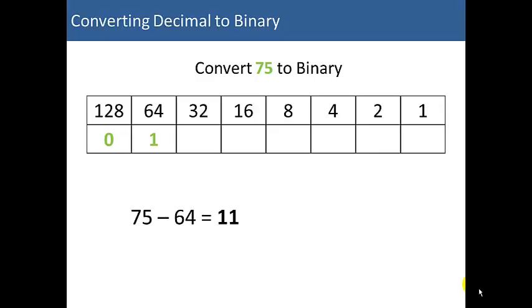Now, we have 11 decimal units left to distribute across the binary conversion from 32 down. So, we'll compare 11 to 32. 11 is less than 32, so we're going to put a 0 there and move on. 11 is less than 16, so we'll put a 0 under the 16. And we'll move on.